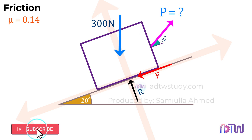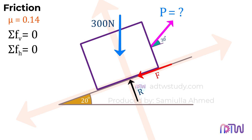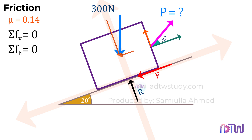To find the value of force P, we have to sum the vertical and horizontal forces. Since these two forces are inclined, we have to resolve them into their vertical and horizontal components. The angle made by the pulling force P is 30 degrees with our considered horizontal axis. Therefore, the horizontal component of this force P is given as P cosine 30 degrees, and the vertical component is given as P sine 30 degrees.